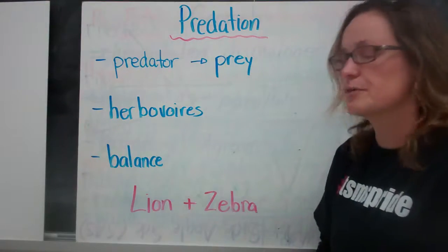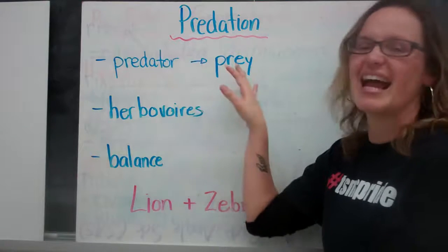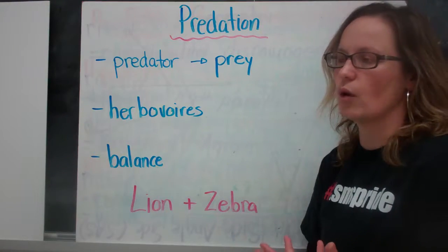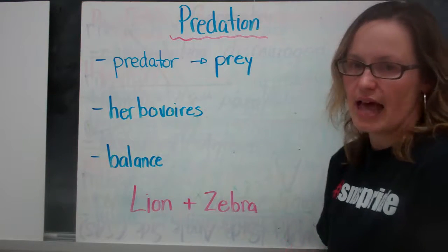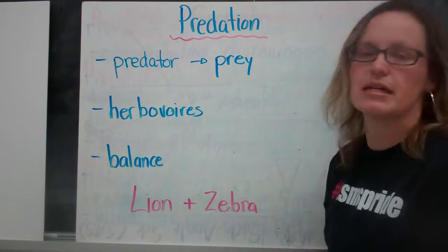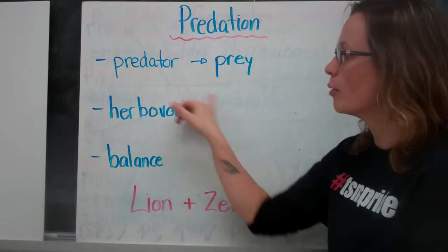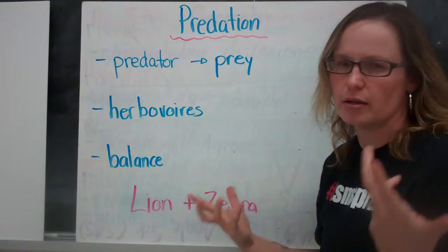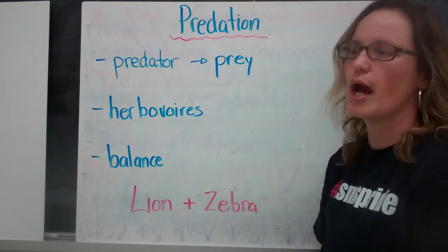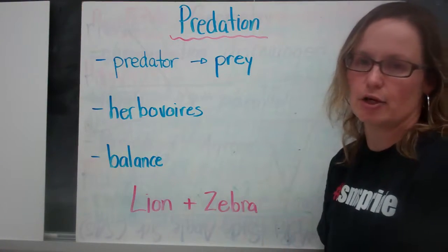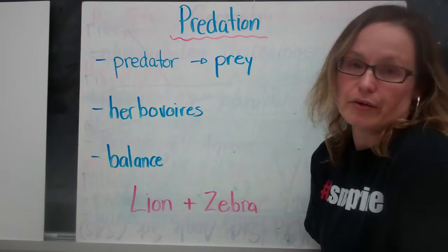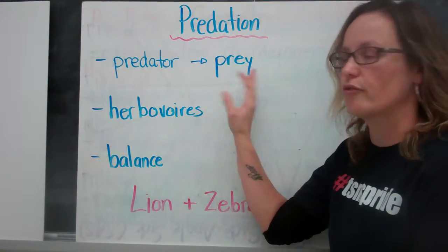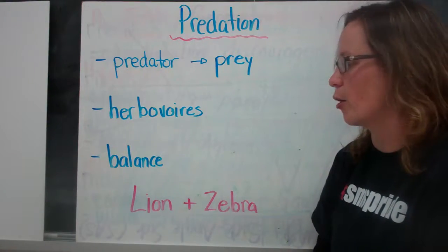The first is predation — we think of the predator and the prey. This is where one organism hunts and eats another organism in order to meet its basic needs. A herbivore, an organism that only eats vegetation and plants, cannot be considered a predator because you have to hunt your prey to be considered a predator, and we don't hunt grass. The predator would be a carnivore, while the prey could be a carnivore or a herbivore.